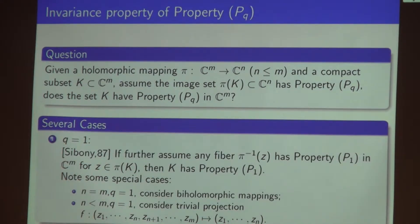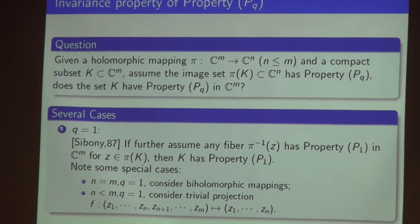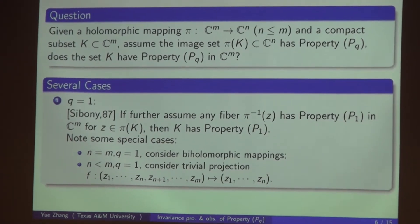There are several earlier results here for q equal to 1. By Sibony's work, if you further assume that the fiber pi inverse of z has property P_1 in C^m for any z in the image set pi(K), then the original set K has property P_1.